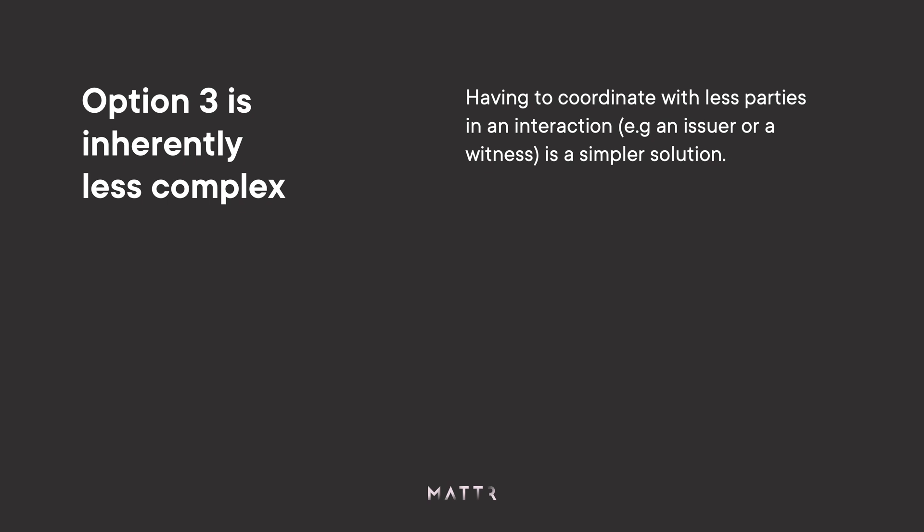We would posit that option three, the cryptographic solution, is inherently less complex if other properties around that cryptographic solution hold true — simply because if you have fewer parties to coordinate with in an interaction, and fewer parties that have to be present during the interaction for it to occur, it is a less complicated solution.